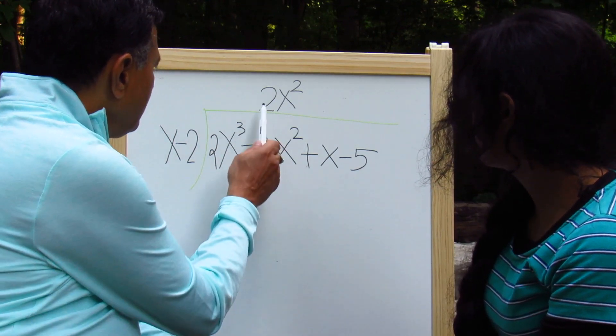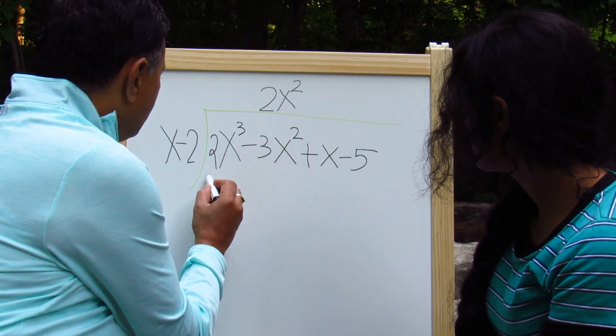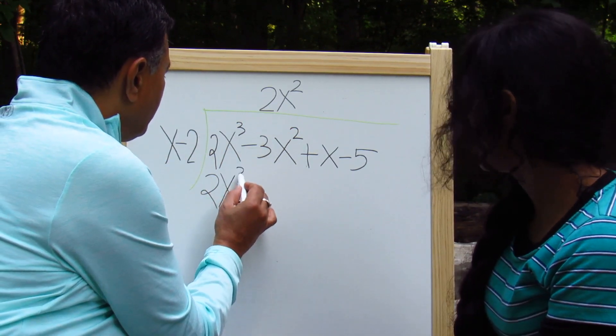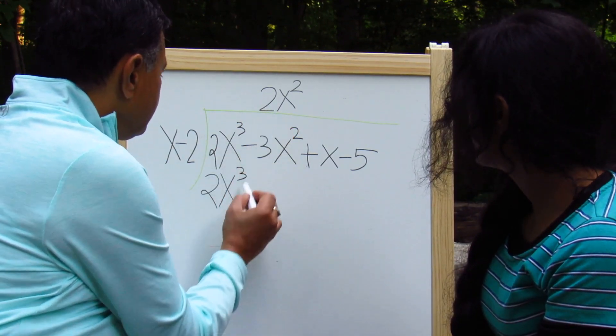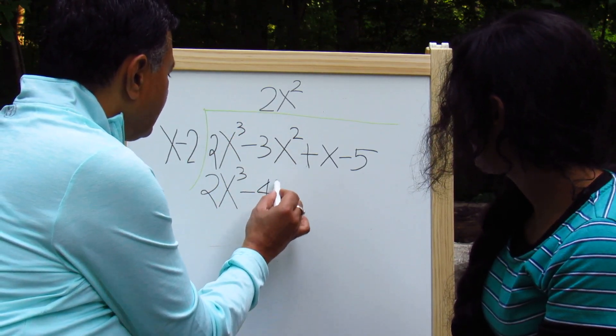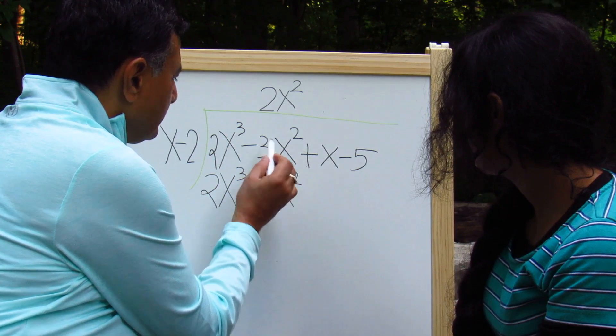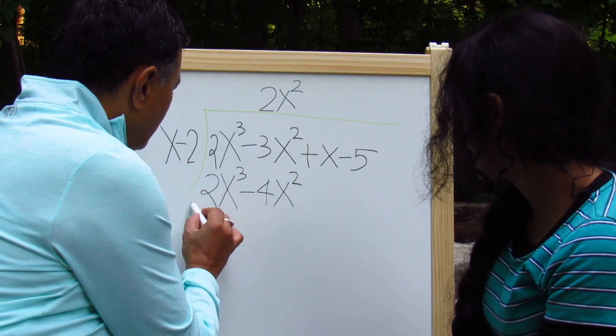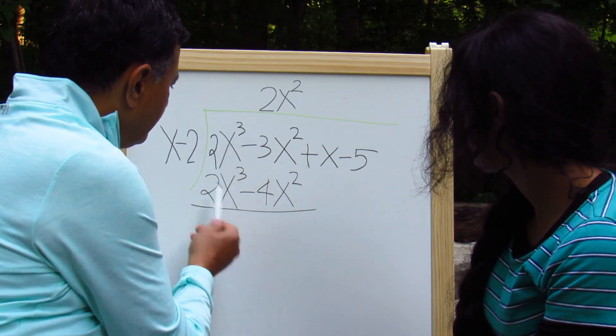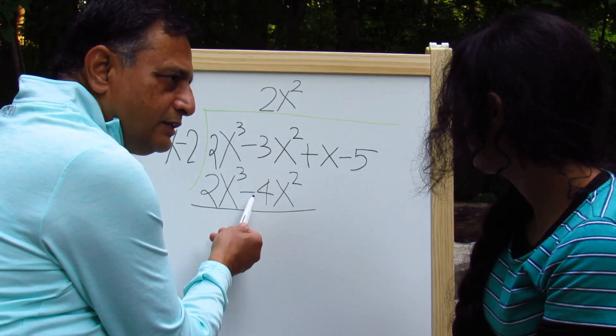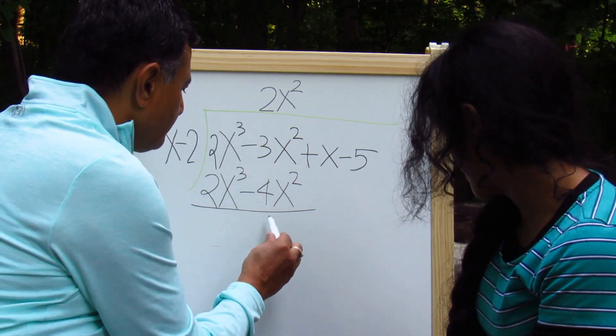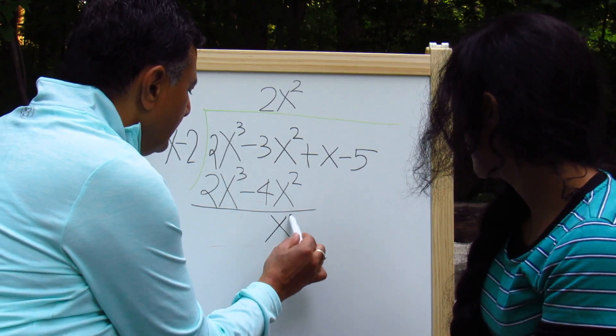So that becomes part of our answer, the quotient. Now, multiply this quotient with the divisor x minus 2 using your distributive property. So what do you get? So you get 2x squared times x will give me 2x cubed. So they can cancel out. And minus 2 times 2 is 4. 4x squared. So that's the first step.